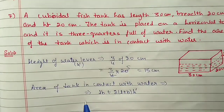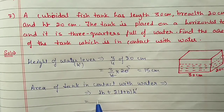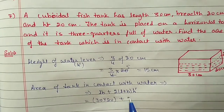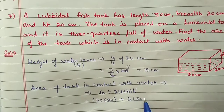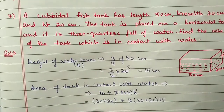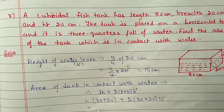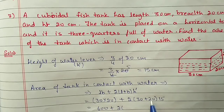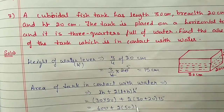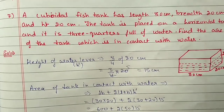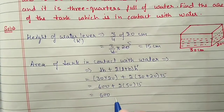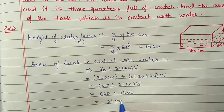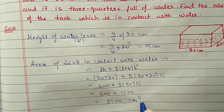Substituting the values: 30 into 20 plus 2(30 + 20) into 15. So 30 into 20 is 600, and 2 into 50 into 15 is 1500. After adding, 600 plus 1500, the area will be 2100 cm².